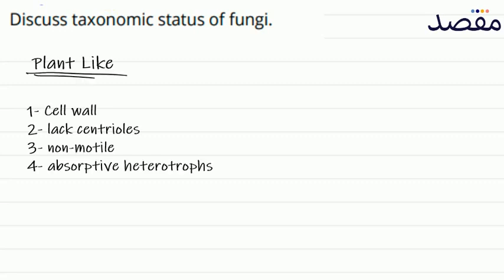Here are the plant-like characters of fungi. First is cell wall — fungi, like plants, have a cell wall. Second is lack of centrioles during cell division. Third is non-motile — plants stay in one position, and fungi also remain in the same position.